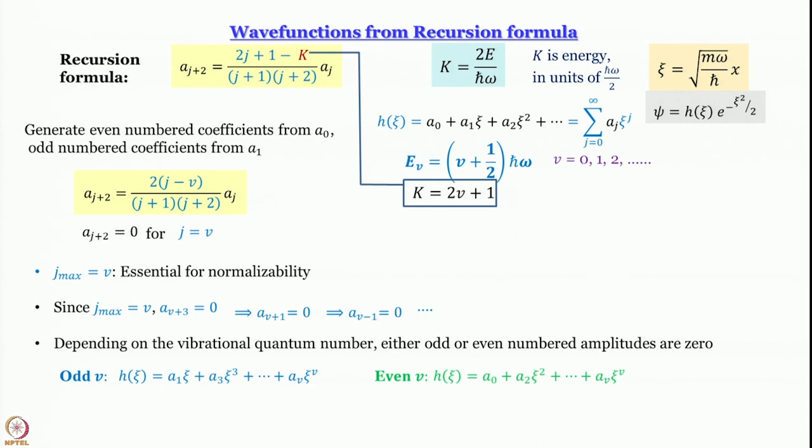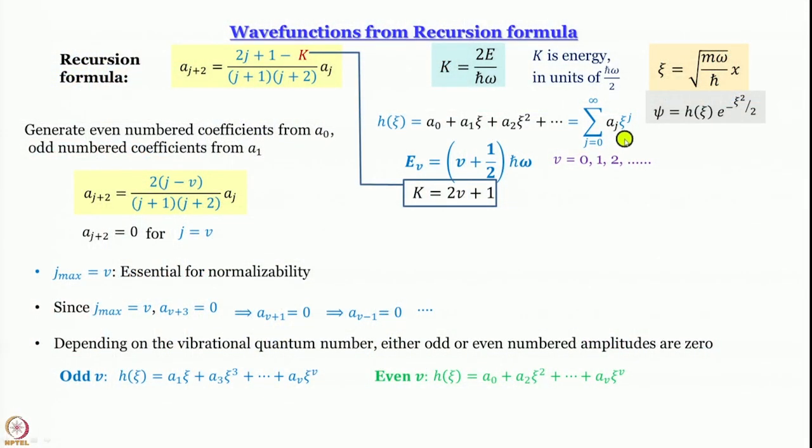Which means suppose v equals 0, then 0th term is enough. 0th term does not mean no term - 0th term means for j equal to 0, xi to the power j will be 1 and you will be left with a_0. Suppose your v equals 5, that means you have to sum from j equal to 0, 1, 2, 3, 4, 5 - that is enough. You do not have to go to j equal to 5 lakh 32,097. That is what is the meaning of j_max equal to v.